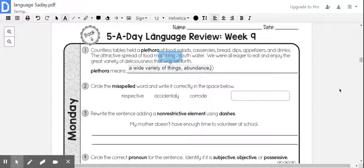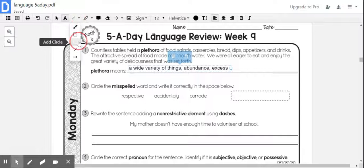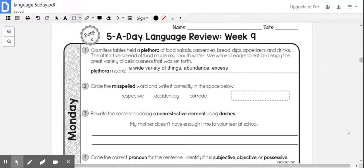Number two: Circle the misspelled word and write it correctly in the space below. So we have 'respective,' 'accidentally,' and 'corrode.'